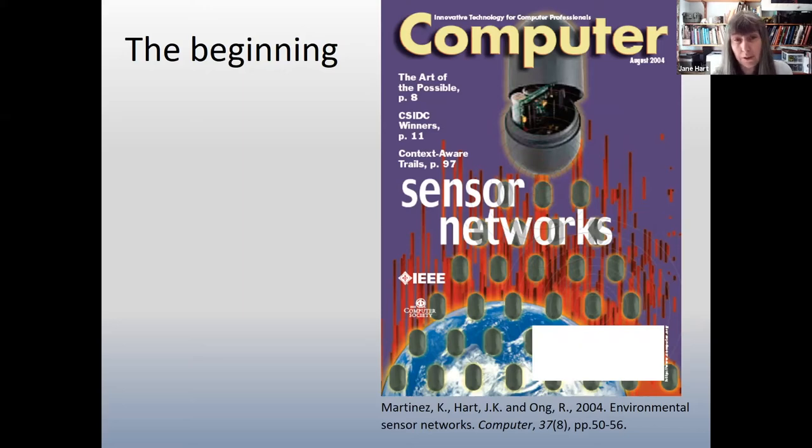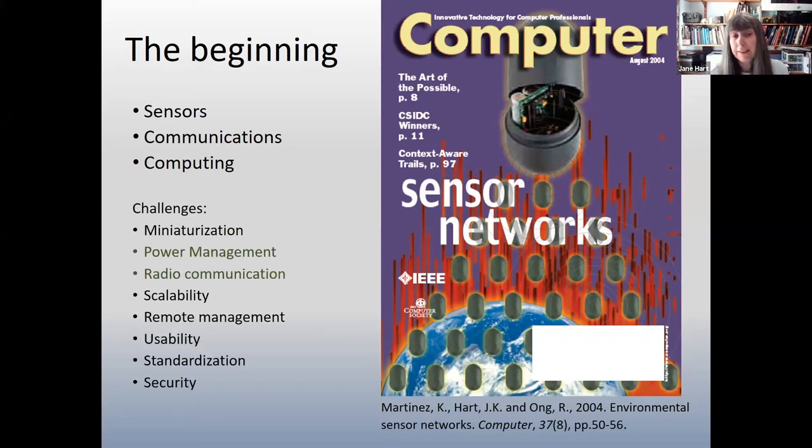We talked about how there were three sciences that you need to understand for sensor networks: firstly, sensors, communications and computers, computing. And we talked about the challenges, so this is back in 2004, that you needed to allow sensor networks to happen.